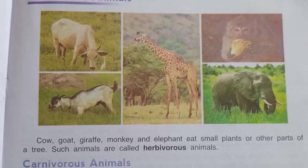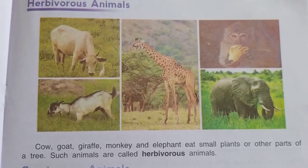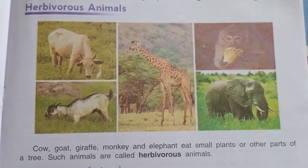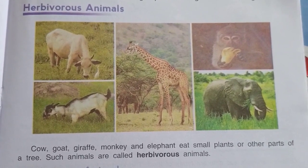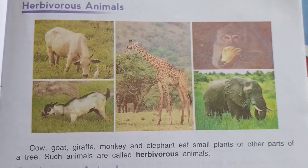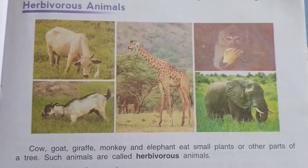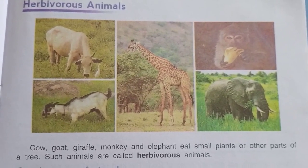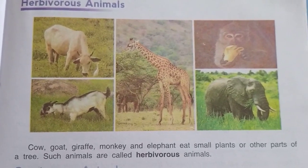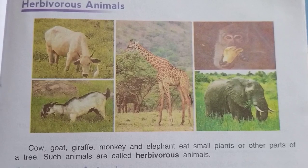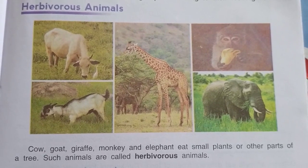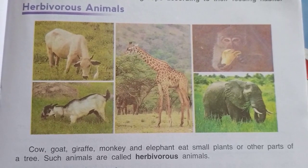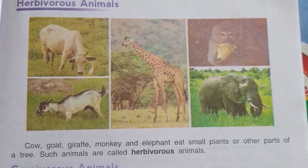Cow, goat, giraffe, monkey and elephant eat small plants or other parts of a tree. Such animals are called herbivorous animals.